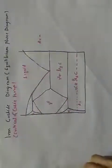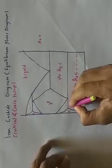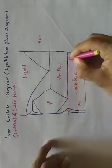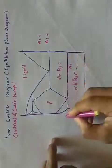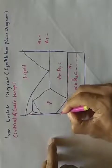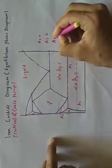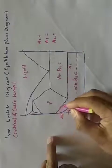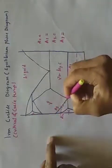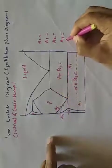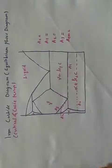The temperature lines are: the first is A0, the second is A1, the third is A2 — a critical temperature — and next is A3, another critical temperature. Finally, we have ACM, which is also one of the critical temperatures.